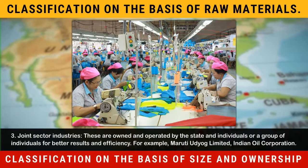3. Joint sector industries. These are owned and operated by the state and individuals or a group of individuals, for better results and efficiency. For example, Maruti Udyog Ltd.